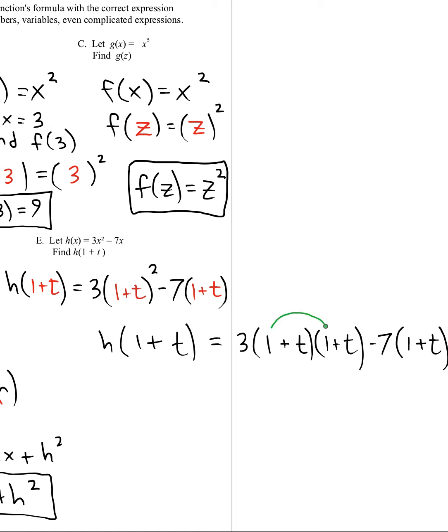Now I want to do FOIL on this. So firsts, outers, inners, lasts. And I'm also going to want to distribute this negative seven to both of those terms.